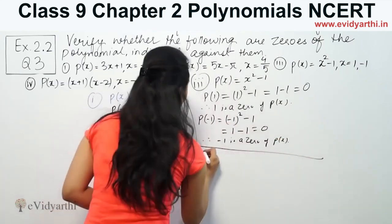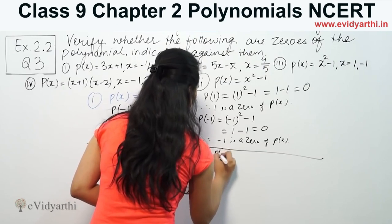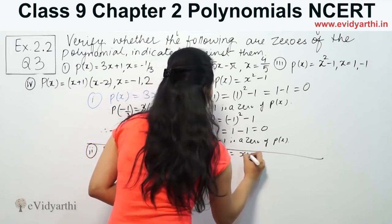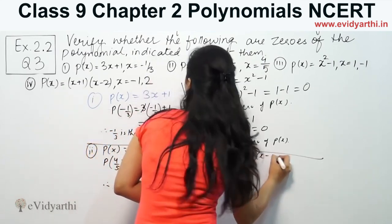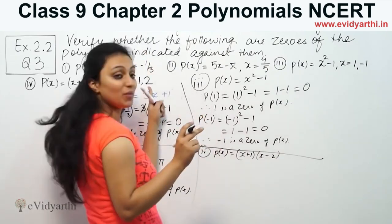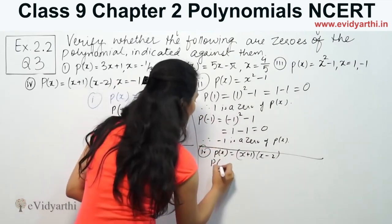For the fourth part, we have polynomial P(x) = (x+1)(x-2). Values given are -1 and 2. Let's check -1 first. If we put -1: